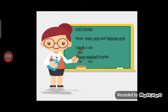Now let's revise. It is clear that if in any sentence the main verb is already given, then 'have' always takes the place of the helping verb only. Let's see these two sentences: 'I have a car.' Here, 'have' functions as the main verb. Whereas in the second sentence, 'I have studied English.' Here, 'have' is the helping verb and 'studied' is the main verb.